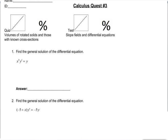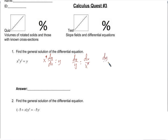Hey everybody, let's get started with number 1. So let's write this as x to the 9th dy/dx equals y. When we separate the variables: dy over y equals dx over x to the 9th, which is dy over y equals x to the negative 9th dx.